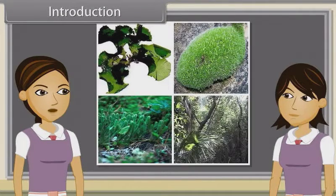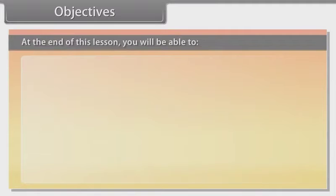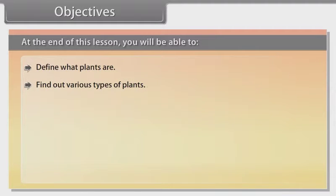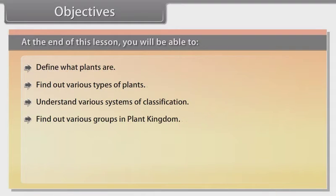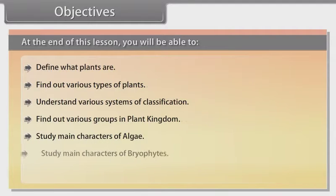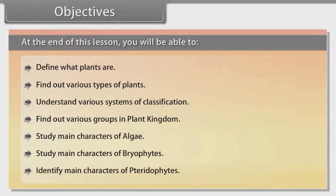Land plants are further divided into following divisions: Thallophyta, Bryophyta, Tracheophyta. Objectives. At the end of this lesson, you'll be able to define what plants are, find out various types of plants, understand various systems of classification, find out various groups in plant kingdom, study main characters of algae, study main characters of bryophytes, identify main characters of pteridophytes.